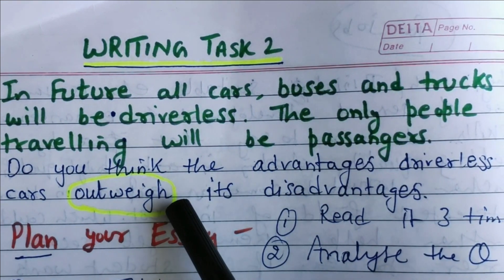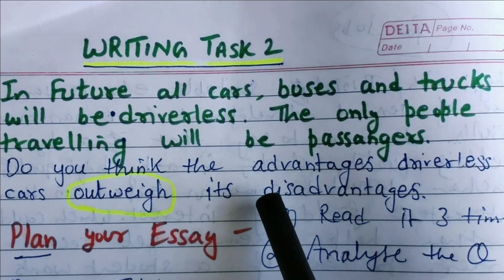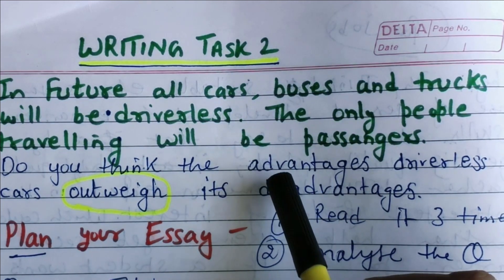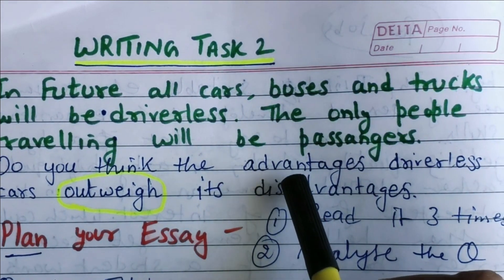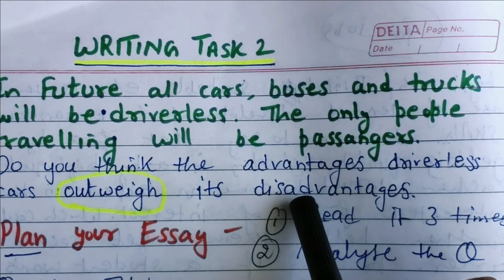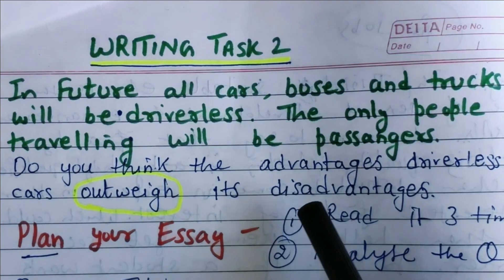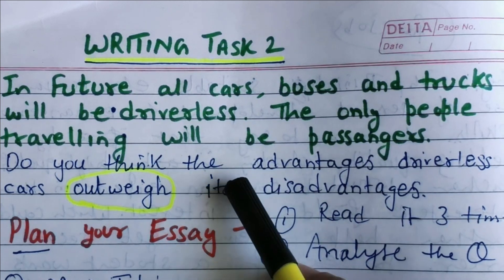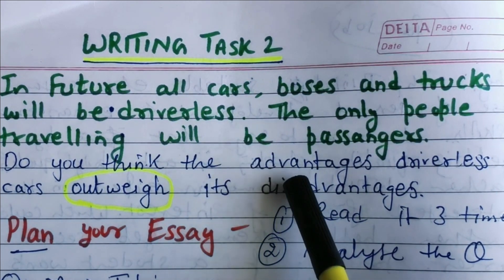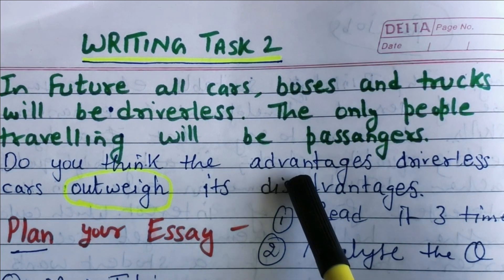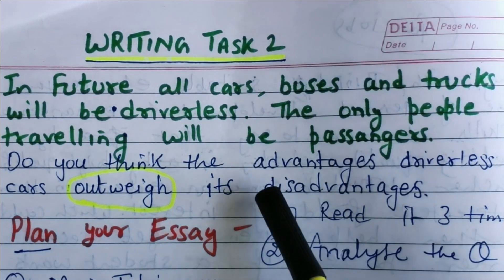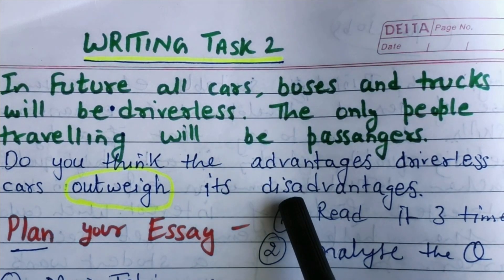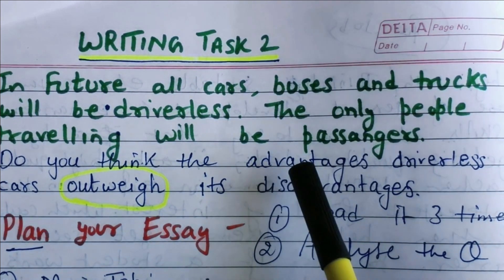The key word here is 'outweigh.' It means you need to show an unbalanced approach — there is no balance between advantages and disadvantages. You need to tell whether this topic has more advantages than disadvantages. If you disagree, you would write more disadvantages than advantages.